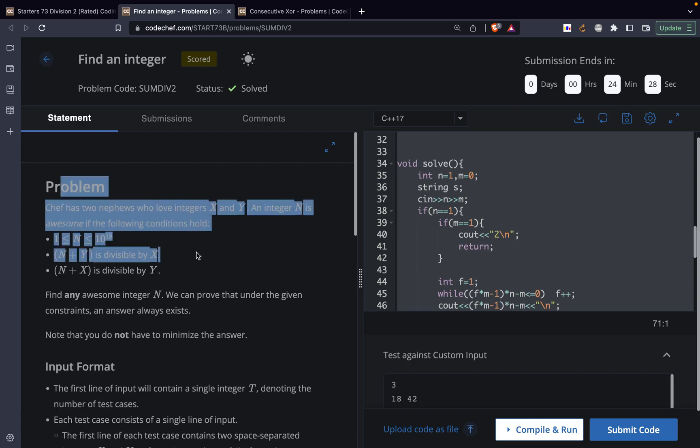The problem actually has a lot of info that is not required. It says that the chef has two nephews who love integers x and y and like an integer n is awesome and all that stuff.